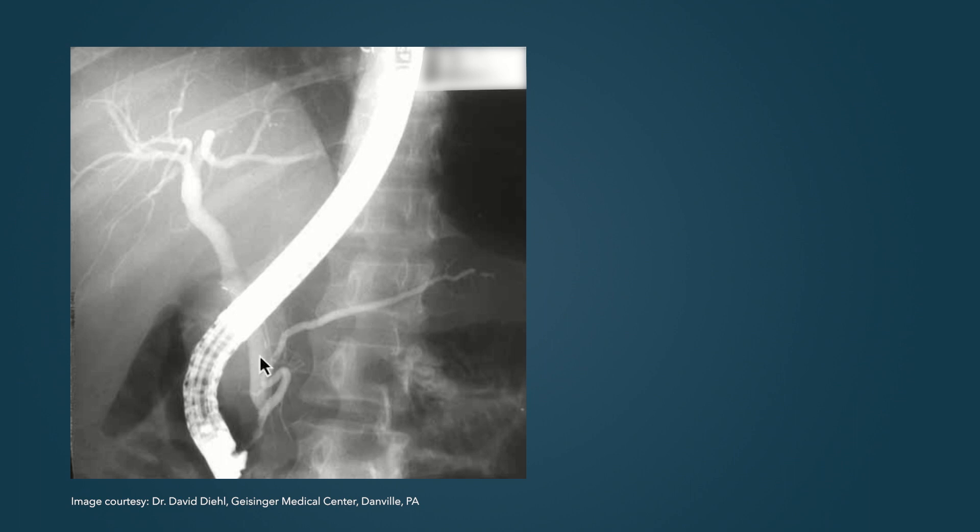The common bile duct has a vertical orientation going up to the liver where these intrahepatic ducts are seen. This point here is called the bifurcation in that there's the right and left systems bifurcating from the common hepatic duct.